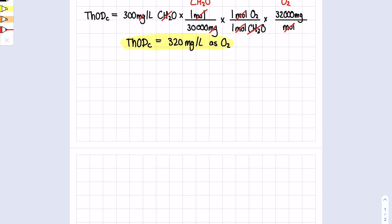Now we'll calculate the ThODn for nitrogen. We'll go back to step one, balancing the formula. We know that the NH3 combustion formula is NH3 + 2O2 produces NO3- + H+ + H2O. Notice how there is supposed to be a 2 there to balance out the oxygens.